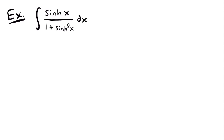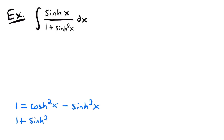Unless we remember our hyperbolic identities. One of those identities is that 1 equals hyperbolic cosine squared x minus hyperbolic sine squared x. If we add hyperbolic sine squared x to both sides, we get 1 plus hyperbolic sine squared x equals hyperbolic cosine squared x. That expression appears in our denominator, so we can replace it with hyperbolic cosine squared x.